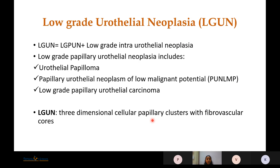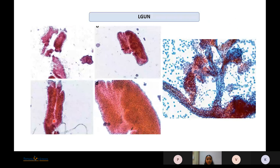Low-Grade Urothelial Neoplasm comprises low-grade papillary urothelial neoplasm, which includes urothelial papilloma, papillary urothelial neoplasm of low malignant potential, and low-grade papillary urothelial carcinoma. The diagnostic criteria are three-dimensional cellular papillary clusters with presence of fibrovascular cores — the presence of a fibrovascular core is imperative. Images show papillary clusters where a fibrovascular core can be well appreciated, labeled as low-grade urothelial neoplasm.